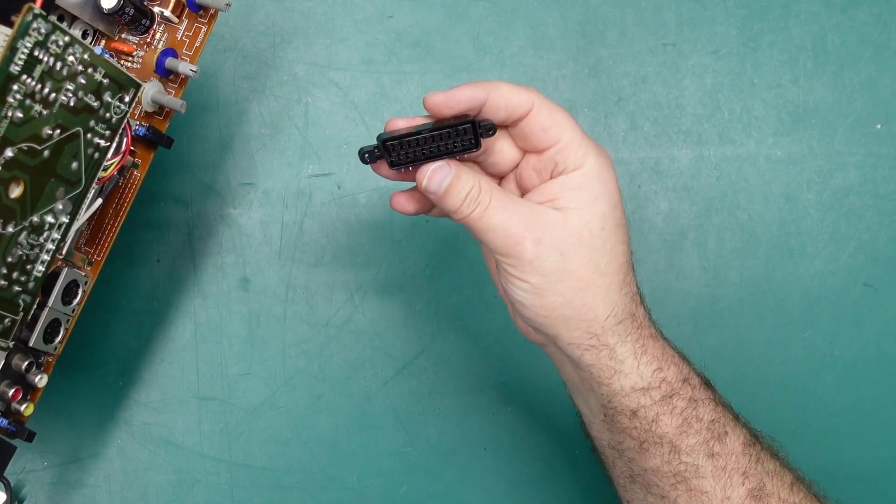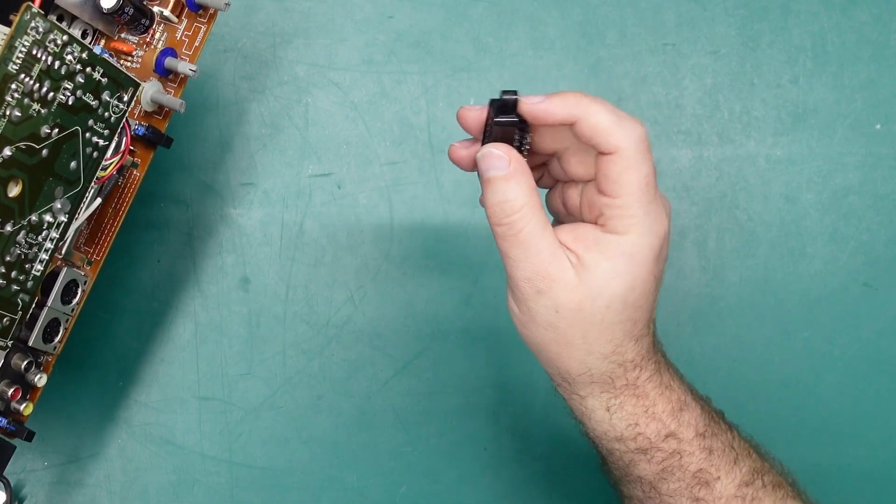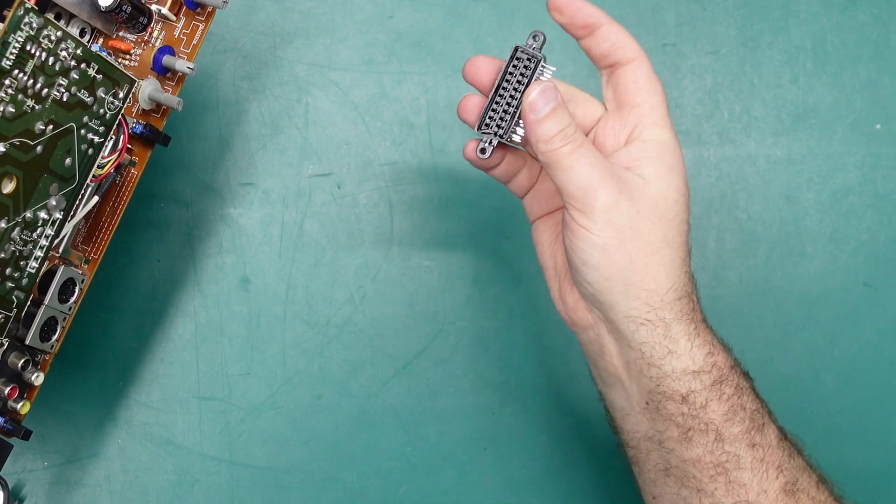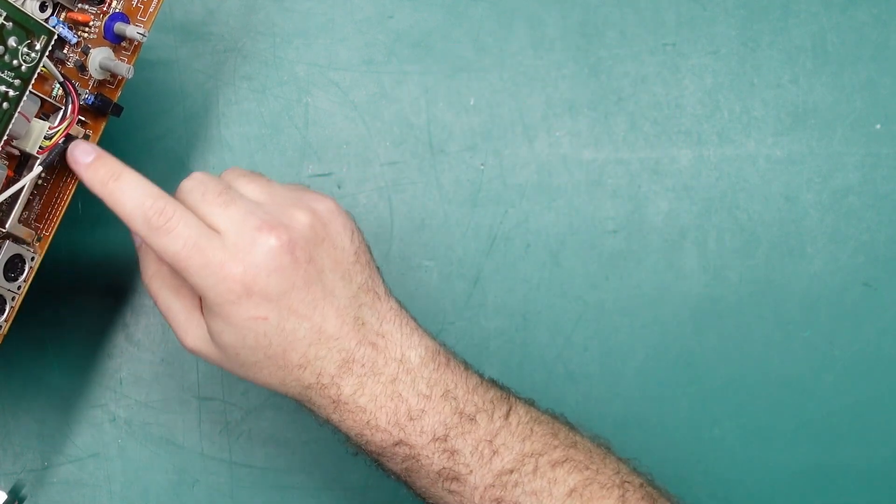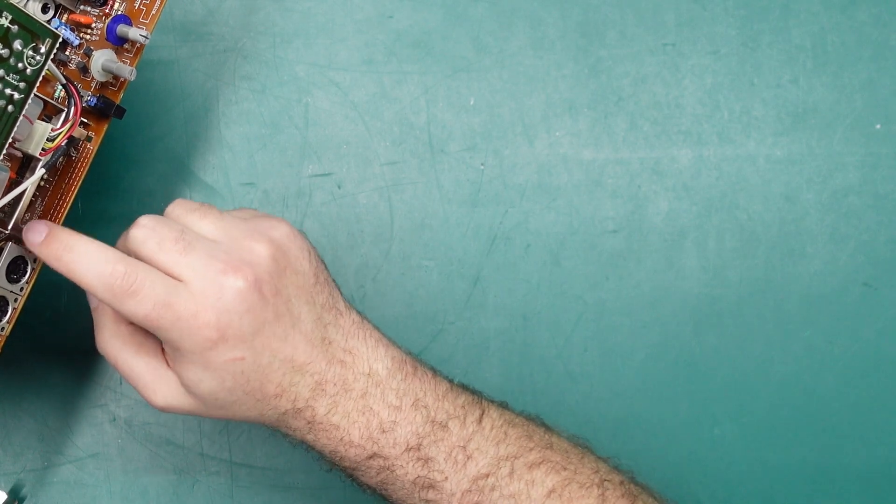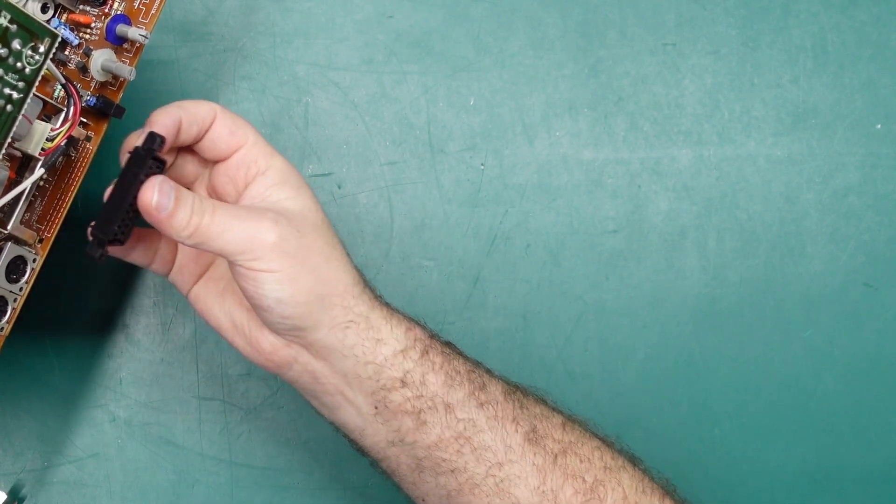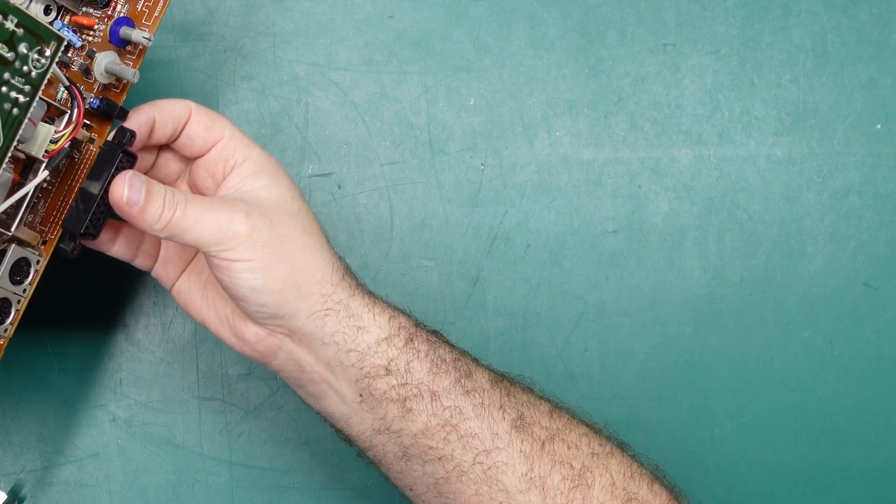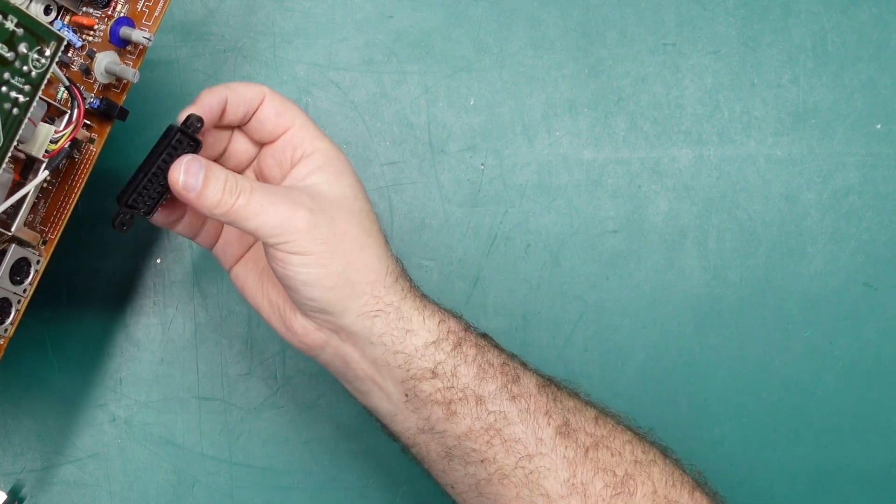I didn't have one of those on hand so I've got one that has these sort of wings out the side with little screw holes. That should work just fine because there is actually a metal plate here that they'll rest up against, so at least that'll provide some strain relief when I'm actually plugging something into the SCART connector.